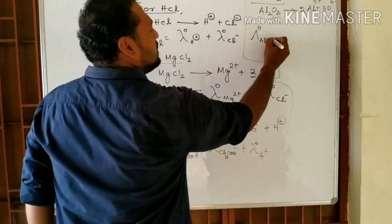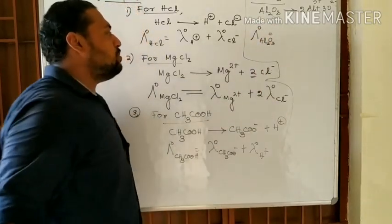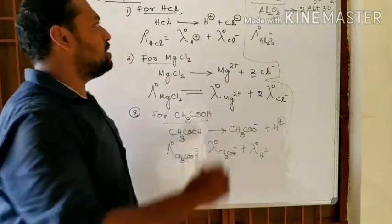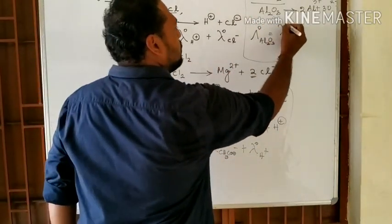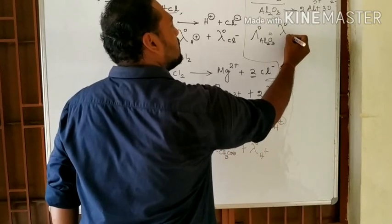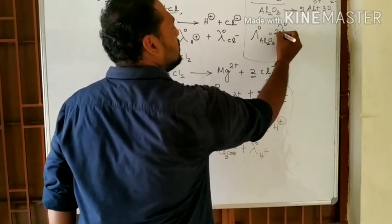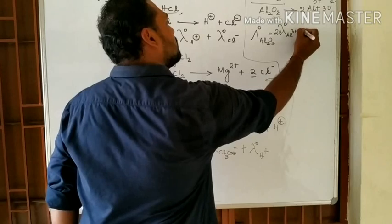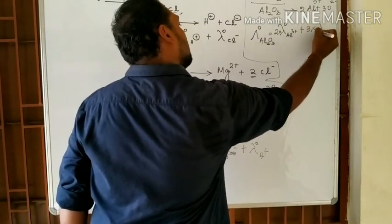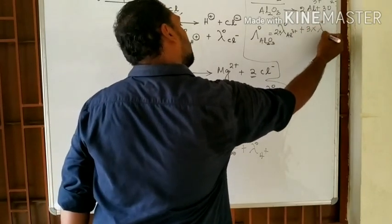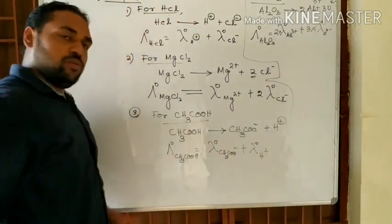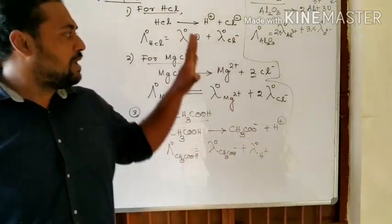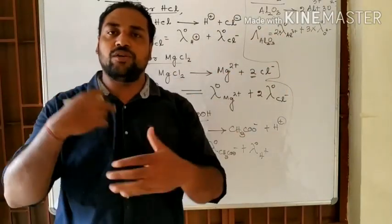For Al₂O₃, applying Kohlrausch's Law: λ⁰(Al₂O₃) = 2·λ⁰(Al³⁺) + 3·λ⁰(O²⁻).